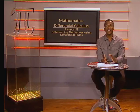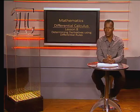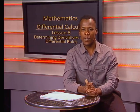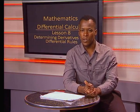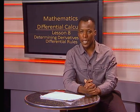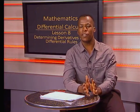Hello, grade 12s. Today we will look at examples where we determine the derivative using differential rules. This leads to determining the equation of a tangent to a curve. In our previous lessons, we learned that f dash of x is used as a notation for the derivative of a function. However, there are many other notations that are used to represent the derivative. Let's take a look at them.